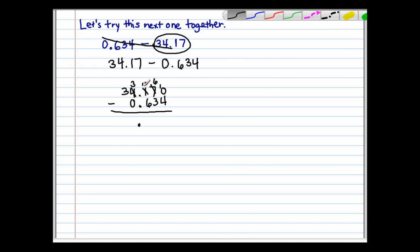And then I have 11 minus 6, that's okay. And then 3 minus 0, that's okay. And then 3 minus 0, that's okay. All right, let's subtract. 10 minus 4, 6. 6 minus 3, 3. 11 minus 6, 5. 3 minus 0, 3. And 3 minus 0, 3. So the answer comes out to 33 and 536 thousandths.